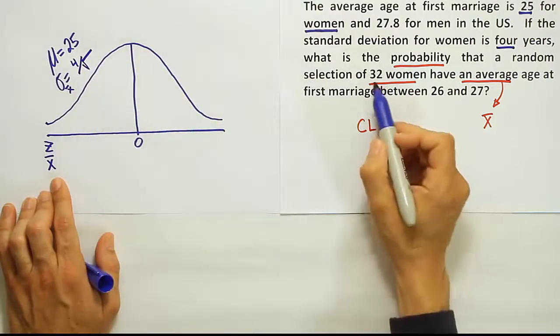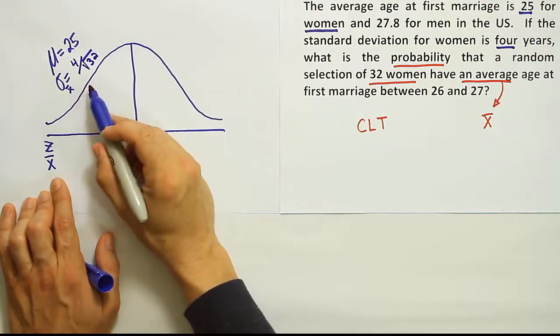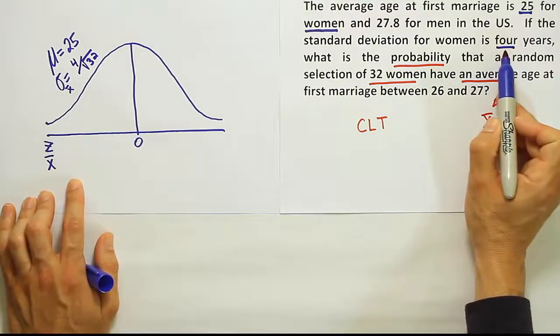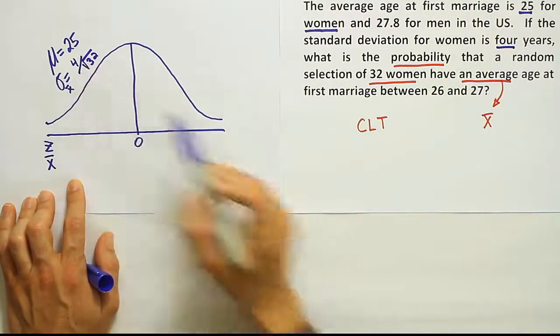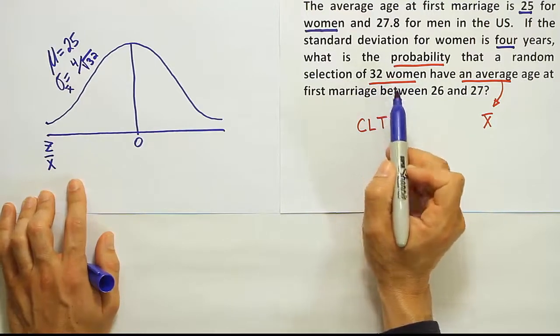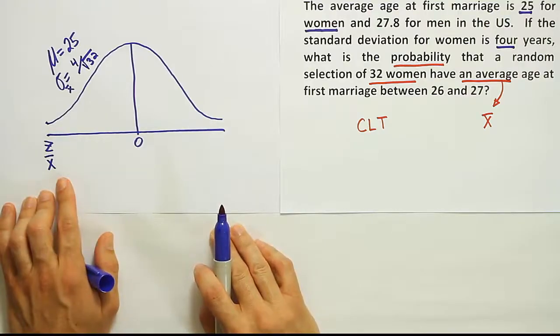It will no longer be four for this problem because we're going to have to divide it by the square root of n. So we're adjusting it. In this case, the n in this problem is 32, so we're going to divide by the square root of 32. So this is the big difference, that when we do the standard deviation, we have to take the number they give us and divide it by the square root of n because there is a sample size here, right? It's not one woman, it's 32 women. So we have to put that into the problem.